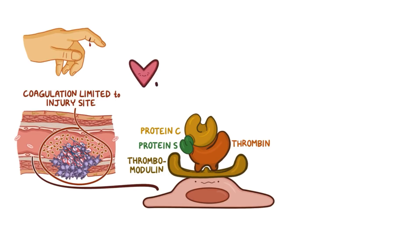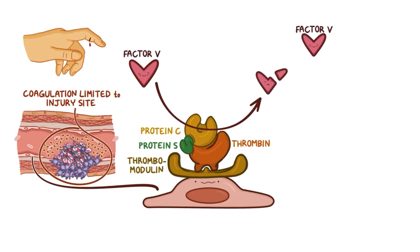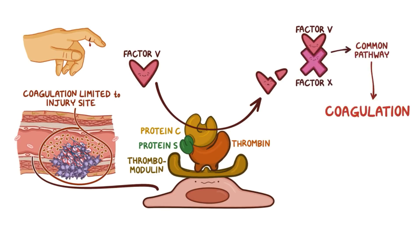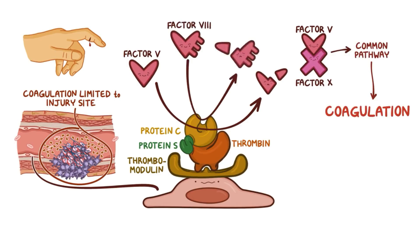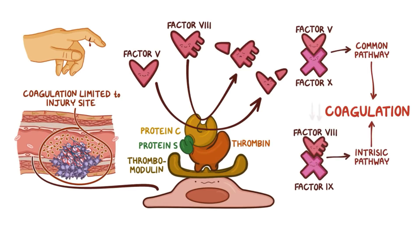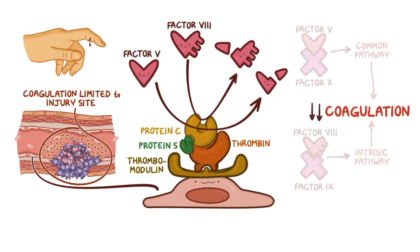Then protein S joins the party, forming a complex that includes protein C, protein S, and thrombin-thrombomodulin. Protein S binding to this complex activates the proteolytic site of protein C, which then cleaves and inactivates active factor V — a cofactor of factor 10 in the common pathway — as well as factor 8, a cofactor of factor 9 in the intrinsic pathway of the coagulation cascade. This slows down coagulation. What's more, the factor V degradation product also binds to this complex and further enhances its ability to cleave more active factor V and active factor VIII, further limiting coagulation.